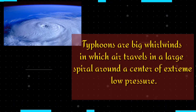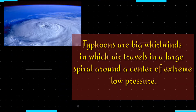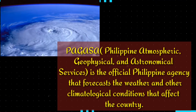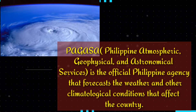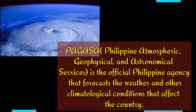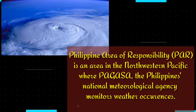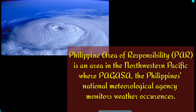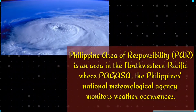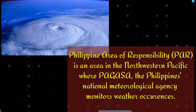Typhoons are giant swirling winds in which air travels in a large spiral around the center of extreme low pressure. PAGASA, or Philippine Atmospheric Geophysical and Astronomical Services, is the official Philippine agency that forecasts the weather and other climatological conditions affecting the country. The Philippine Area of Responsibility, or PAR, is an area in the northwestern Pacific where PAGASA monitors weather occurrences.